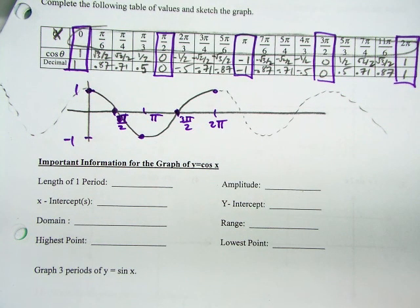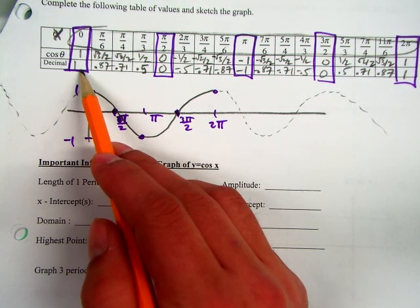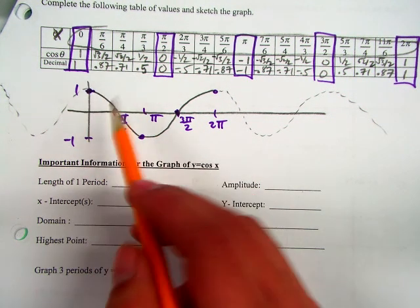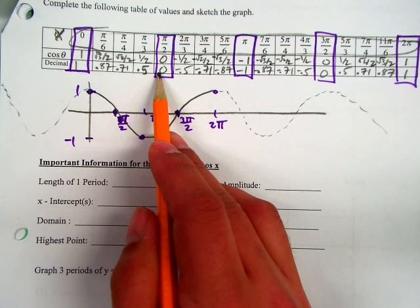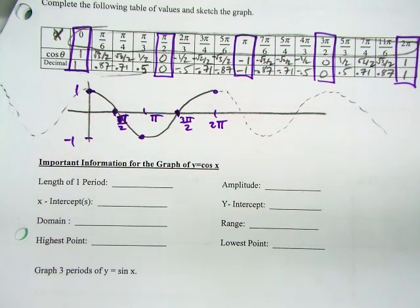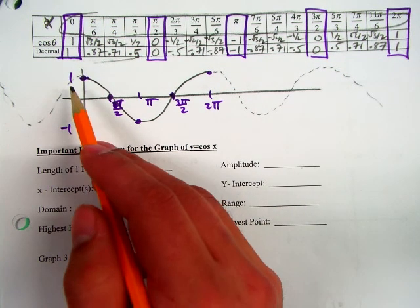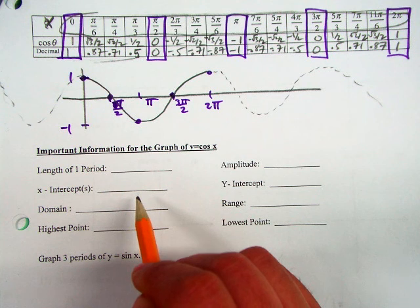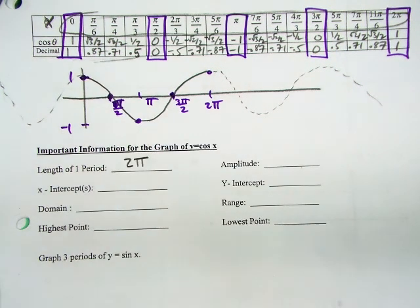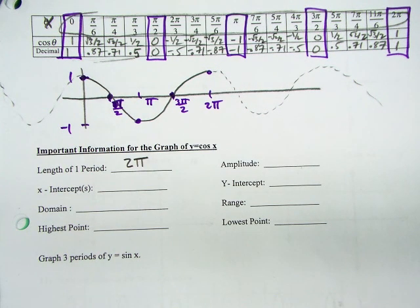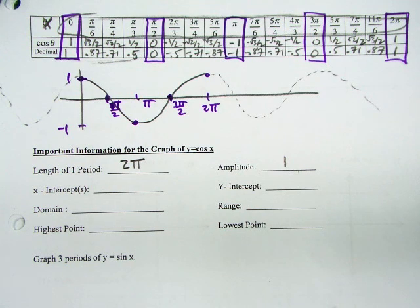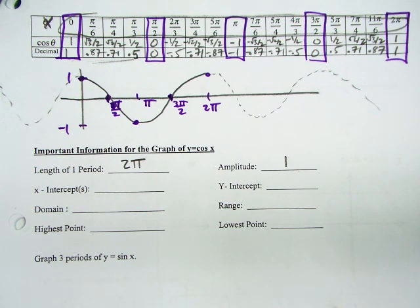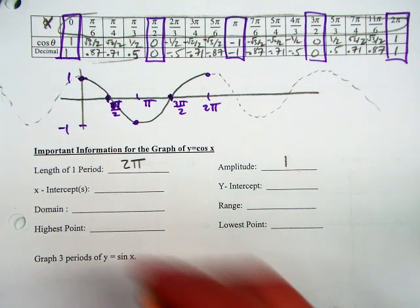Based on the table, because we found from 0 to pi over 2, these values are decreasing. Does that make sense? Same question. How long does it take for this graph to repeat itself? So the length of the period is also 2 pi. The amplitude is the same as the sine graph. It's 1 for this.